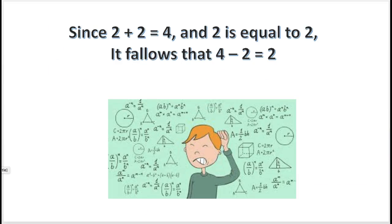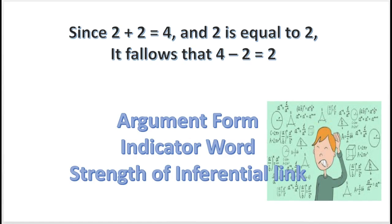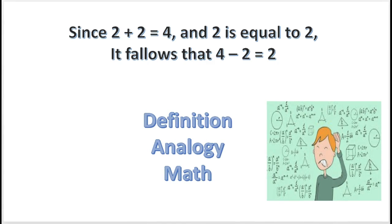Here is another practice problem. Listen to this argument: Since 2 plus 2 equals 4 and 2 is equal to 2, it follows that 4 minus 2 equals 2. That's right, it's a deductive argument. The argument has no indicator words, but the conclusion does follow necessarily from the premise, and the argument does have a deductive form. And what would you say that form is? It's math — the conclusion depends on a mathematical procedure.